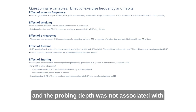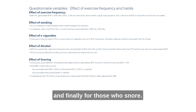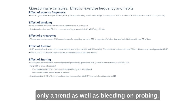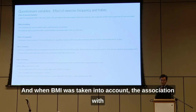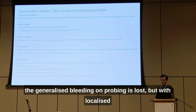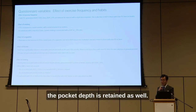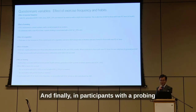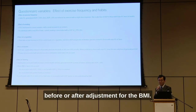For alcohol, bleeding on probing was significantly reduced in those who drink alcohol; when restricted to those with a maximum probing depth of three millimeters, this was only true of generalized bleeding on probing. Pocket probing depth was not associated with alcohol use once confounders were taken into account. For snoring, snoring was associated with increased pocket depth, though this was only a trend, as well as with bleeding on probing. When BMI was taken into account, the association with generalized bleeding on probing was lost but localized bleeding on probing was retained, as was the association with pocket depth. In participants with probing depth of three millimeters or less, there was no association with bleeding on probing before or after adjustment for BMI.